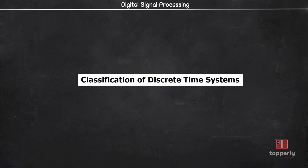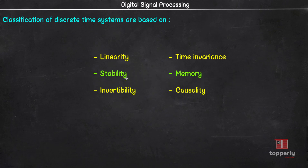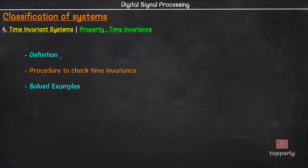Hey everyone, welcome back to DSP lectures. We were discussing about the properties of discrete time systems for the past few videos, and so far we learned about linearity, stability, and invertibility. In this lecture, we will learn about the next property, which is time invariance. We will study the definition of time invariance, how to check if a system is time invariant, and finally a solved example on the topic. So let's get started.